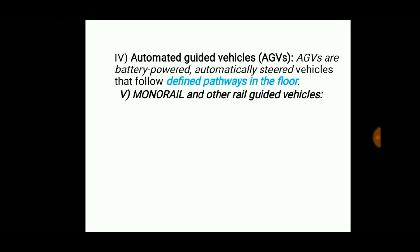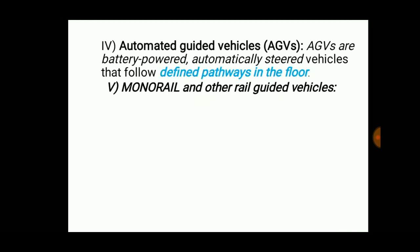Automated guided vehicles are battery-powered, automatically steered vehicles that follow defined pathways in the floor. The defined pathways may be a tape, a painted floor, rail paths, or stickers and sensors implemented on the floor so that the vehicle can sense the path and follow it.